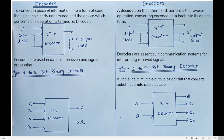So to summarize: an encoder has two to the power of n input lines and n output lines, whereas a decoder has n input lines and two to the power of n output lines. You can see an example here — four inputs, two outputs for the encoder. This encoded information is given to the decoder, so with two inputs I get four outputs back, which is the original signal or original form.